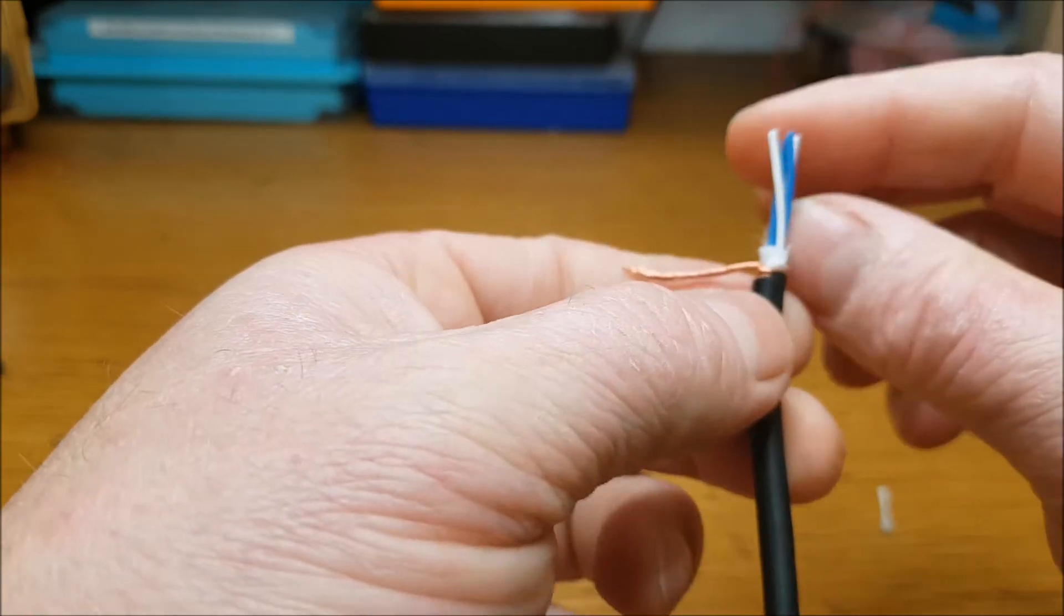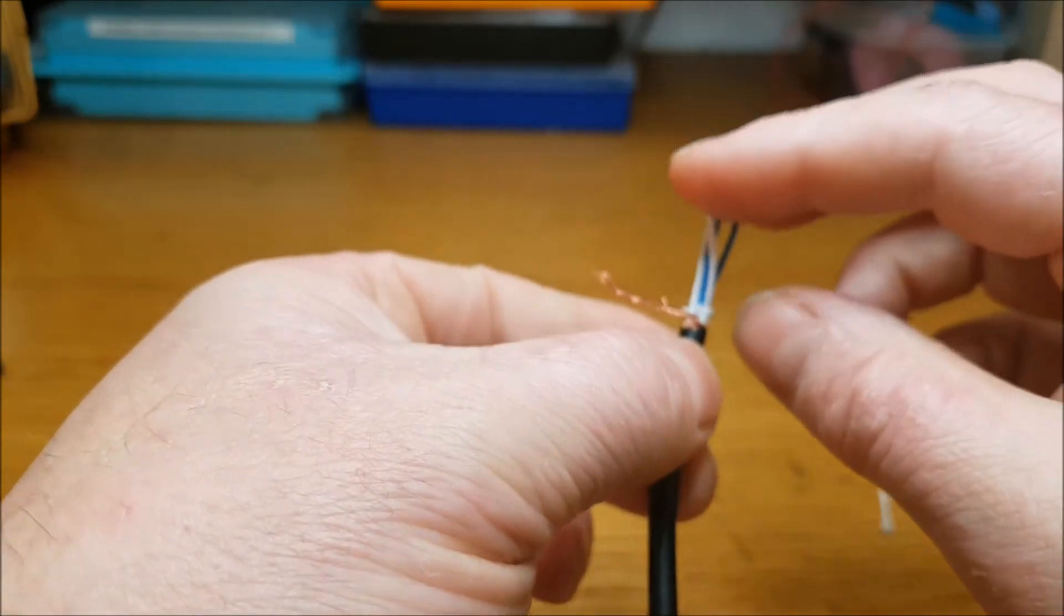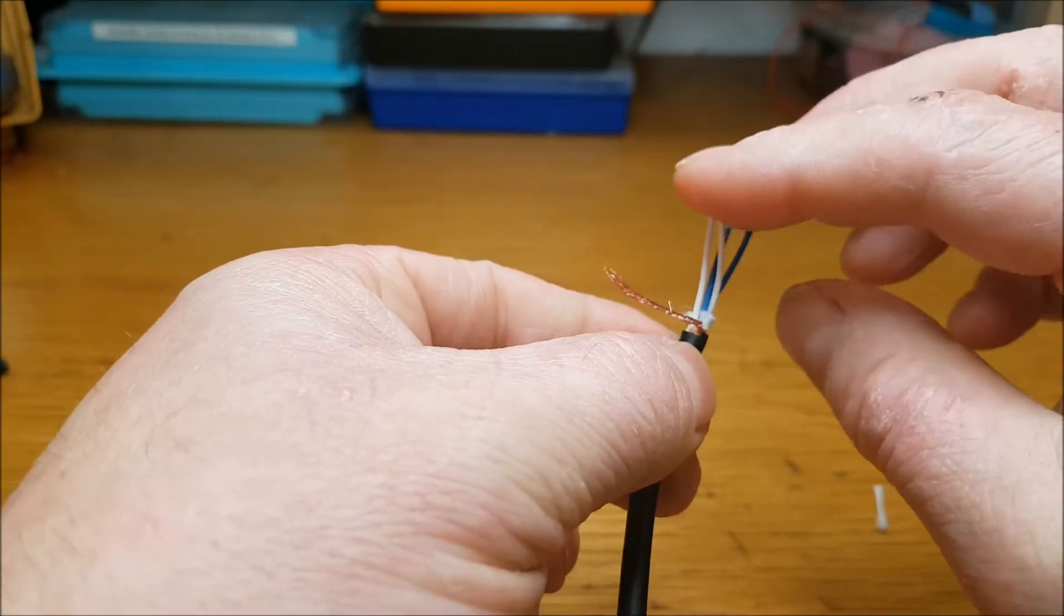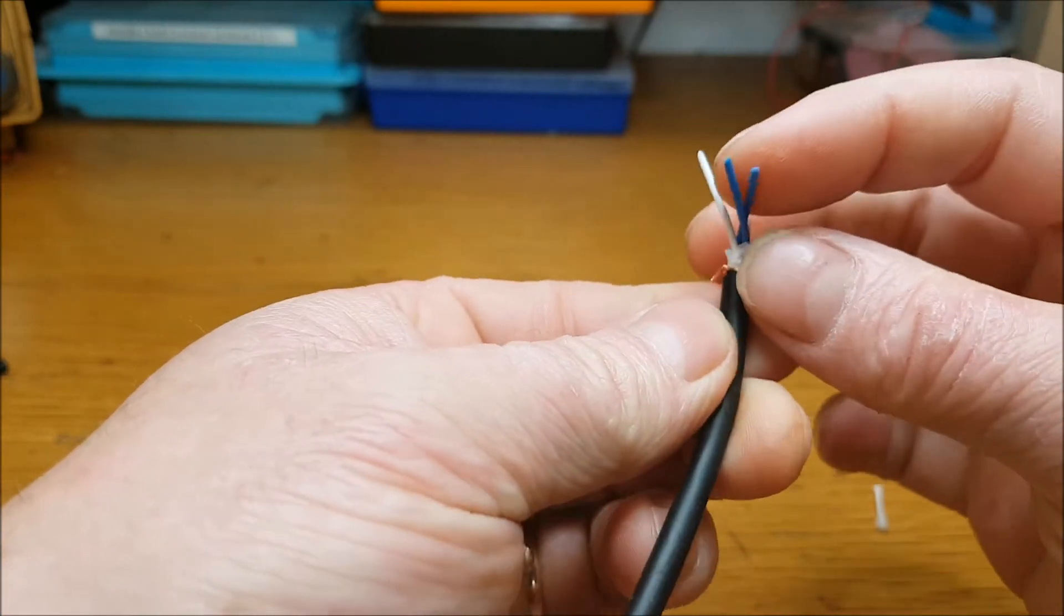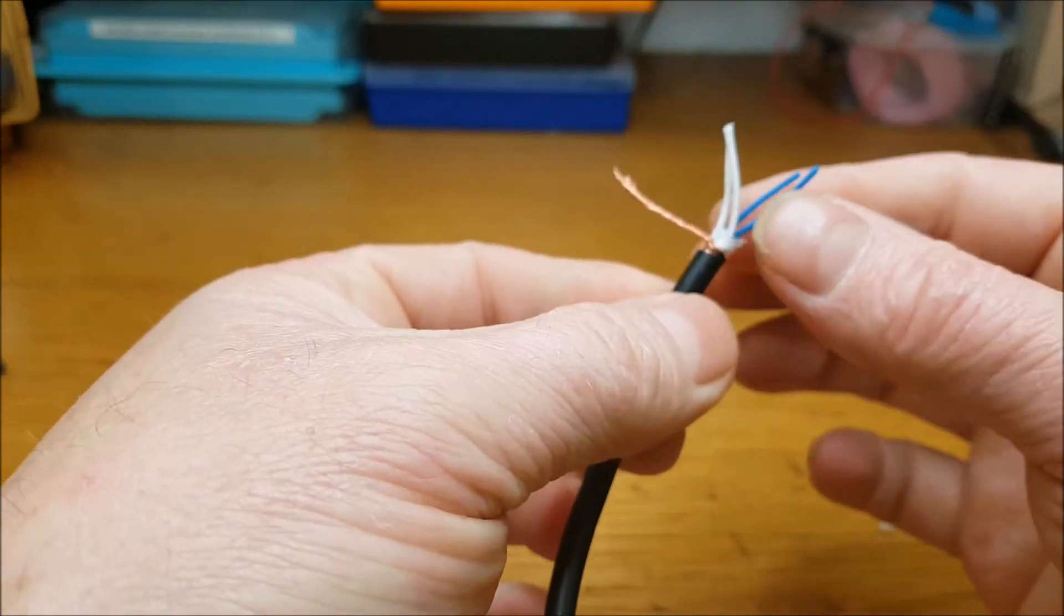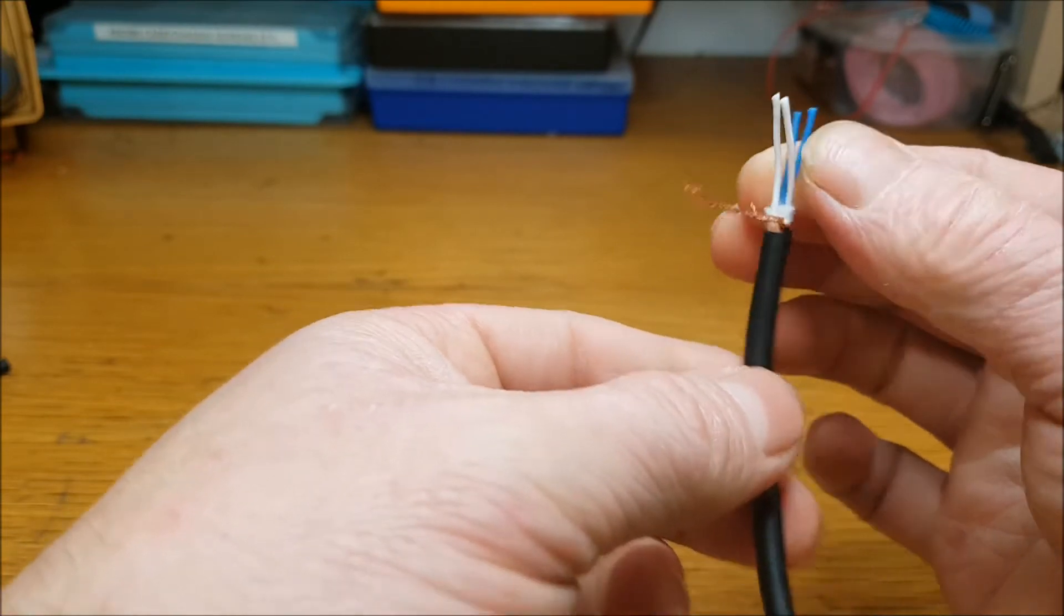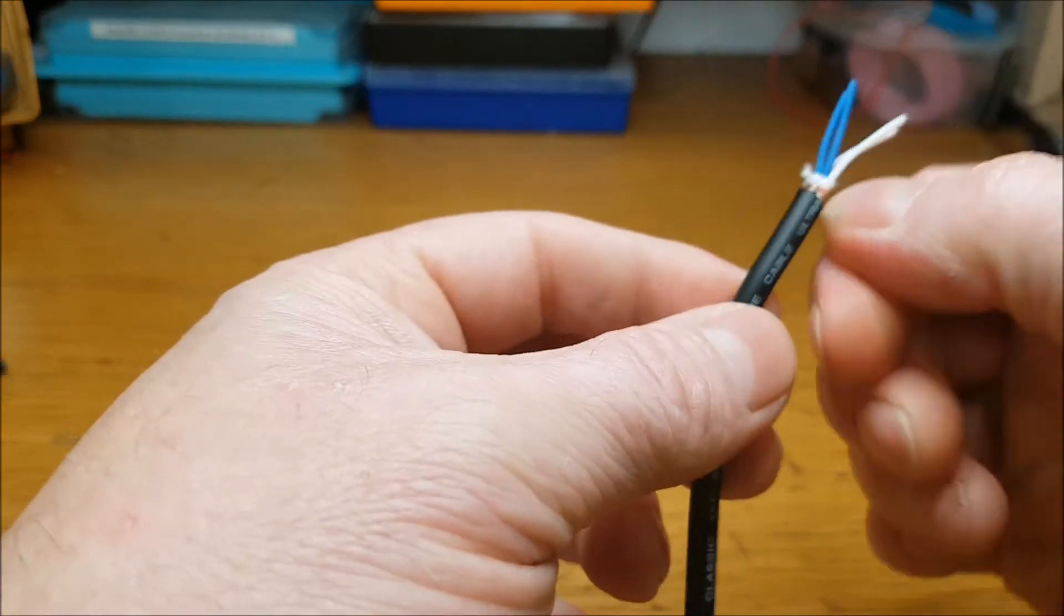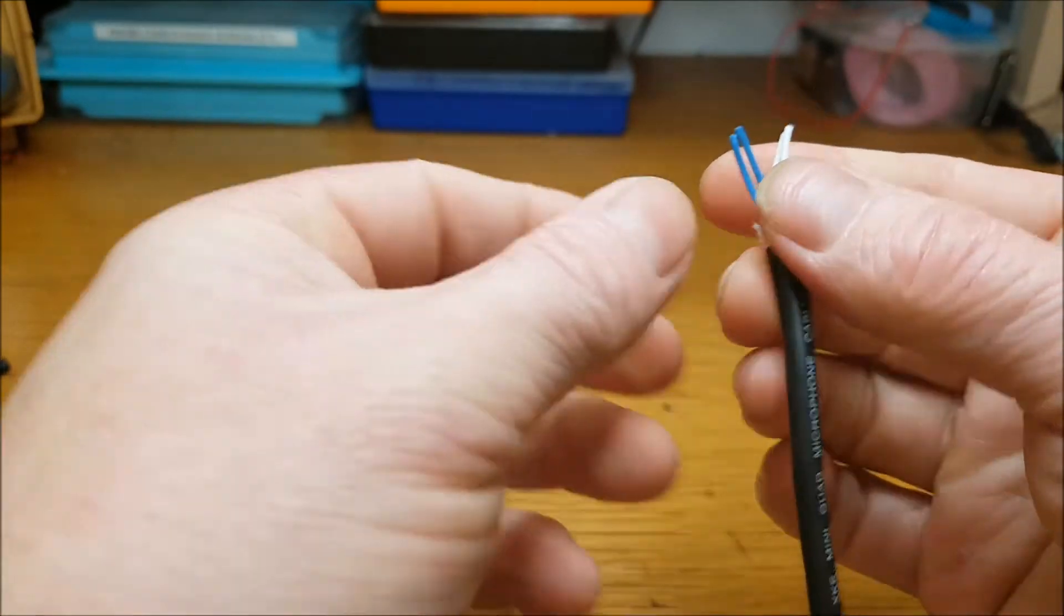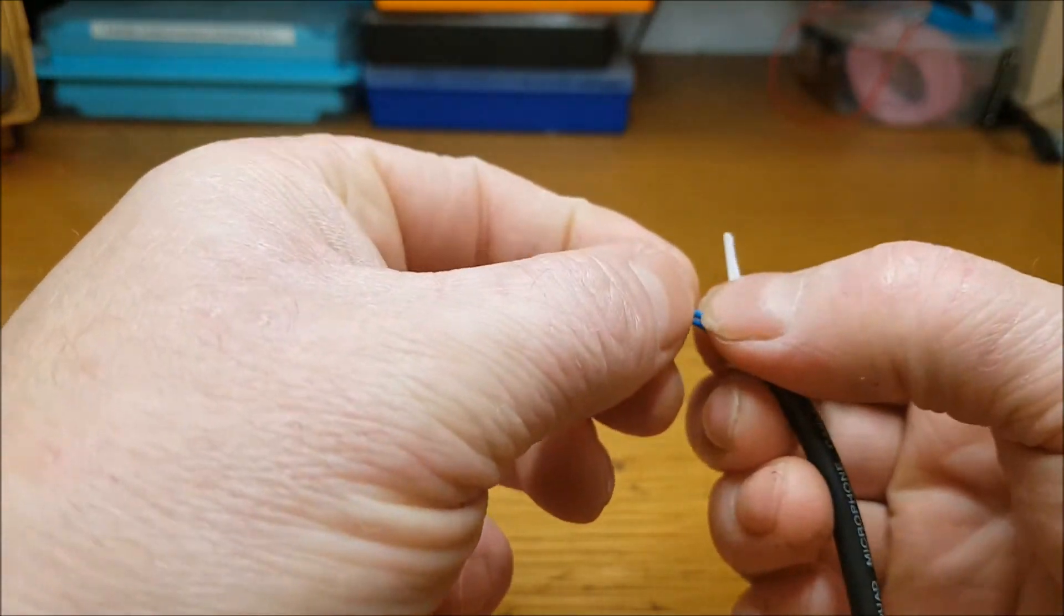You see there we have two blue wires and two white wires. That's what I was telling you about—two conductors for each line. Now the way I do it is I use the white for the audio plus and I use the blue for the audio minus, and the braid of course is the shield.